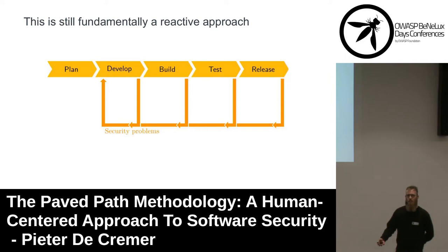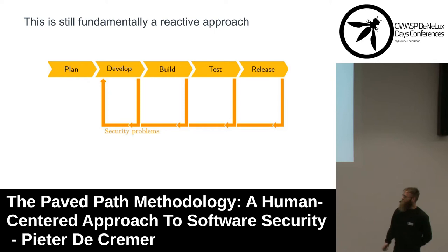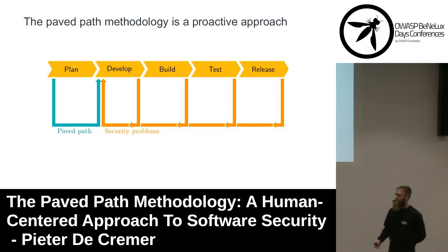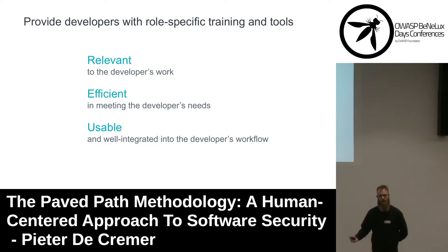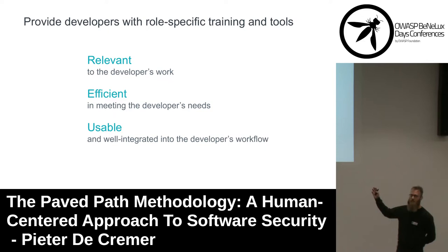These tools fundamentally use a reactive approach — they scan completed or partially completed code and provide feedback to the developers after the fact. They scan for vulnerabilities. With the paved path methodology, we want to take a more proactive approach and instead provide guidelines that, when adhered to, will lead to secure code free from these vulnerabilities. The training and tools we provide to developers should be relevant to their work, efficient in meeting their needs, and usable — well integrated into their workflows so that they do not inhibit their productivity.